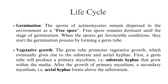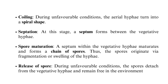Vegetative growth: the germ tube promotes vegetative growth which eventually gives rise to the substrate and aerial hyphae. First, a germ tube will produce a primary mycelium — substrate hyphae that grow within the media. After the growth of primary mycelium, a secondary mycelium — aerial hyphae — forms above the substratum. Coiling: during unfavorable conditions, the aerial hyphae turn into a spiral shape.